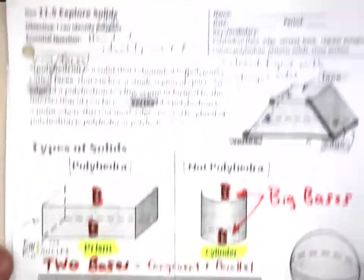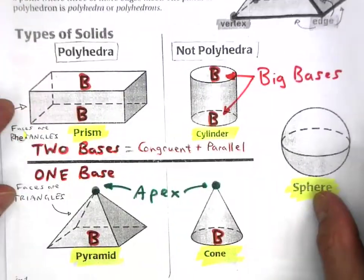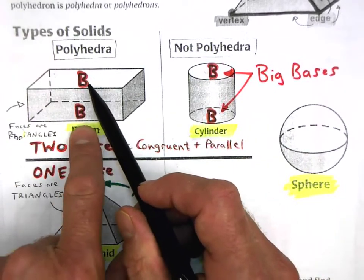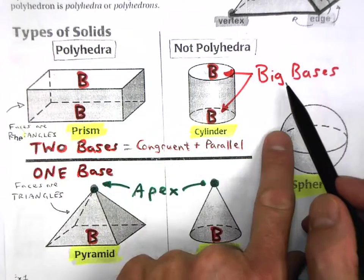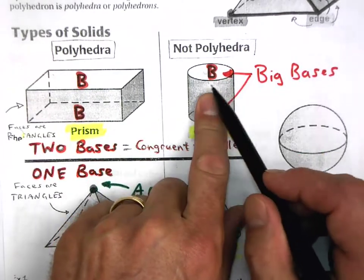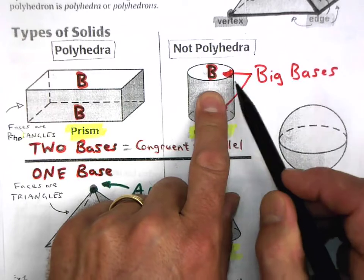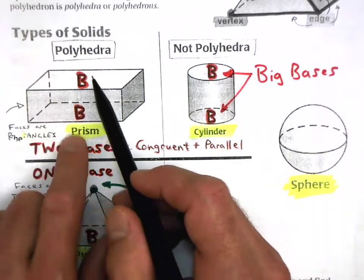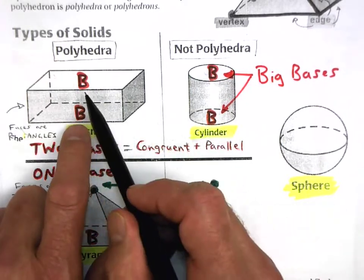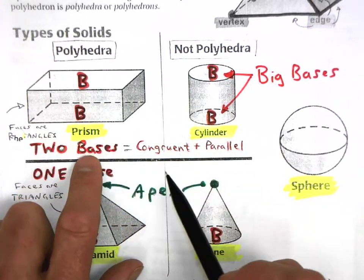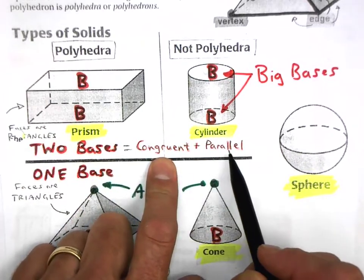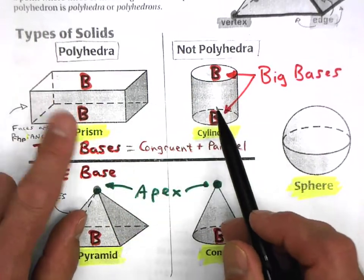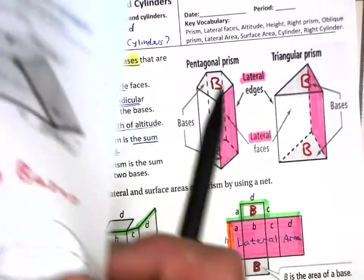Let's remind ourselves back at 11.5 that prisms and cylinders have two bases — two big bases. When we say big base, we're referring to the area of the big base. Prisms and cylinders have two big bases, and those have to be congruent and parallel in order to be bases. So we want to find the surface area of these kinds of solids.